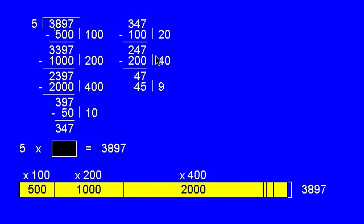And we have 47 left, and now we're down to single multiples. Five nines are 45. And our final remainder is 2.